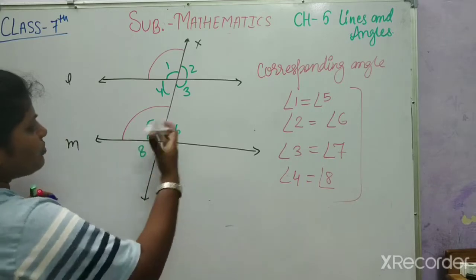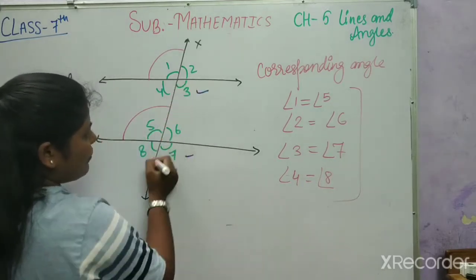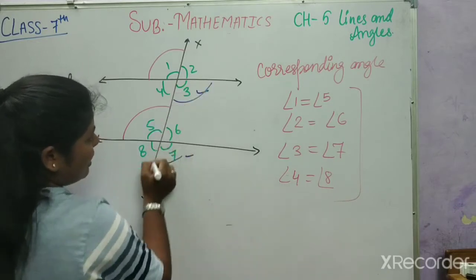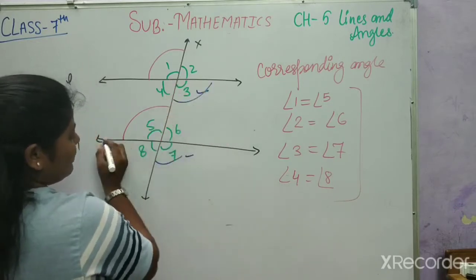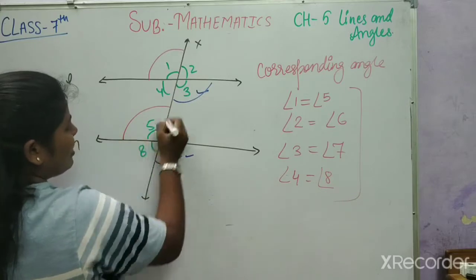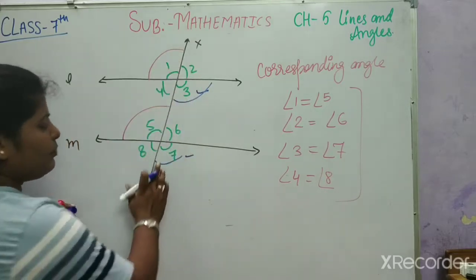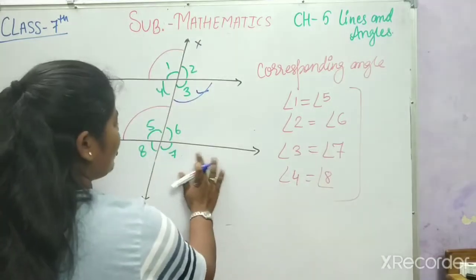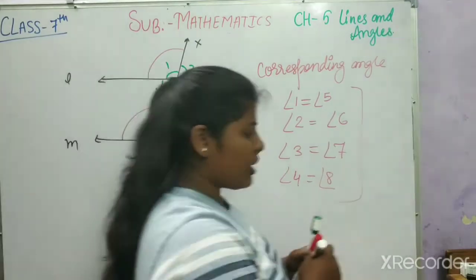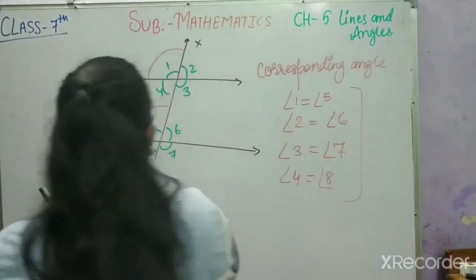If I take angles 3 and 7, this forms an F-shape. If I take angles 1 and 5, this also forms an F-shape. So the first type is corresponding angles.